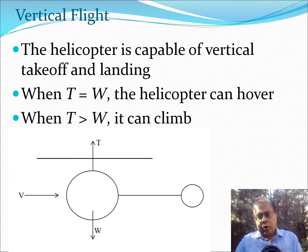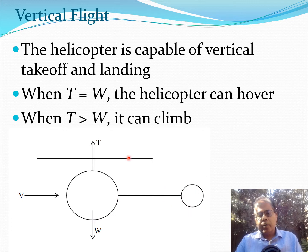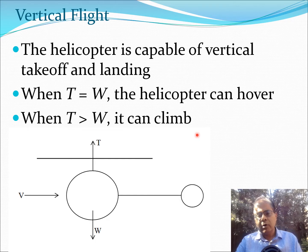If we look at a helicopter in vertical flight, we can create a very simple model: there is a main rotor that creates a thrust vector, a weight which acts downward, a tail rotor, and a tail boom. When thrust T equals weight W, the helicopter hangs in the air — this is known as the hover condition. If T is greater than W, the helicopter starts climbing. These are basic tasks which a helicopter or drone powered by rotating wings can do, which would be difficult for a fixed wing.